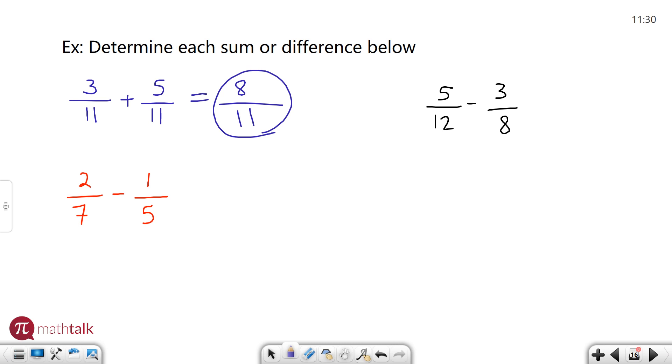Let's look at the next example below in red. Two over seven minus one over five. I can't do anything with this until I find common denominators and equivalent fractions but I really don't want to have to do that. I want to use a trick to find out the answer a little bit easier. So here's the trick.